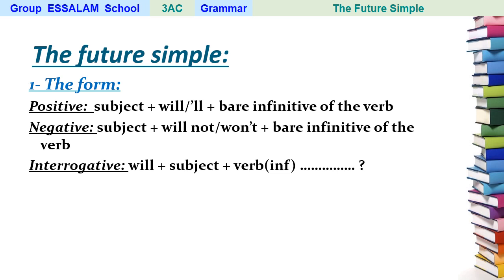So 'will not' is the long form, and 'won't' is the short form, plus the verb in the infinitive. For the interrogative form, it is: will + subject + verb in the infinitive + the rest of the sentence + question mark.